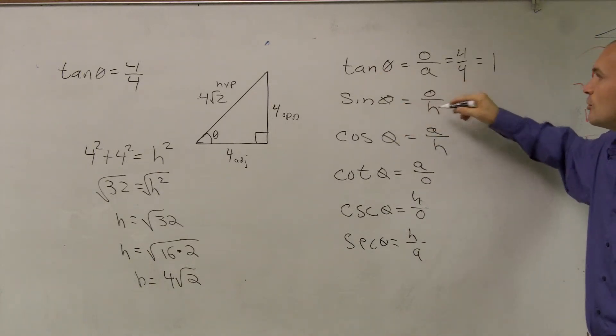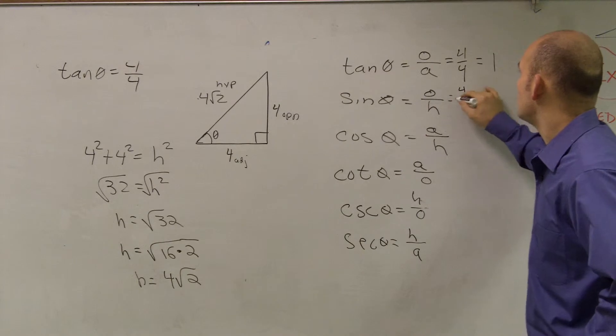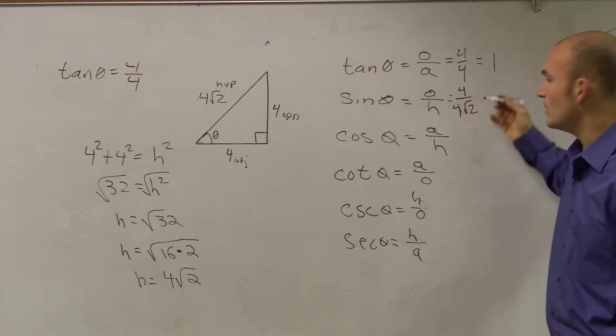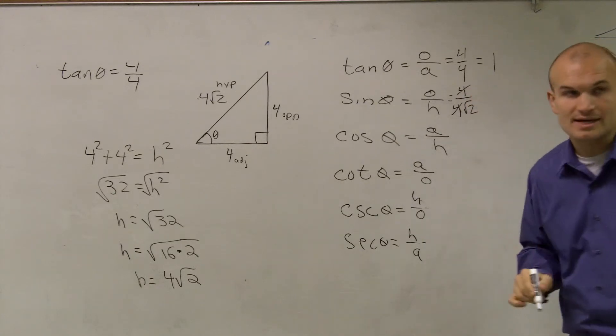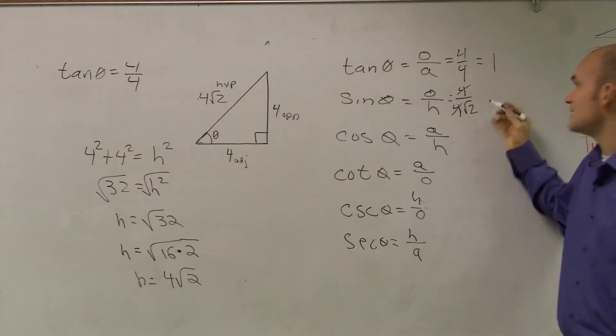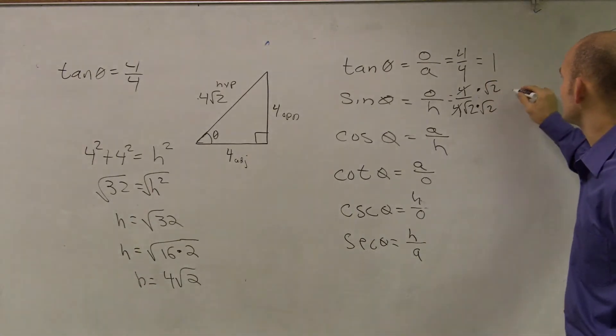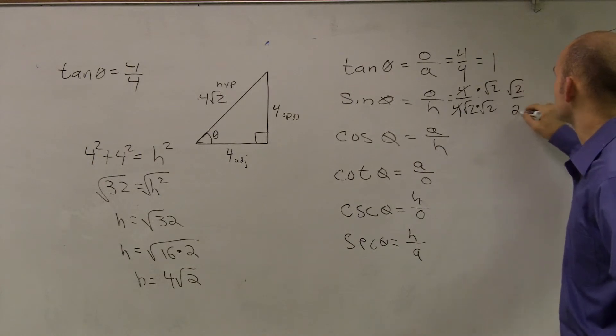Sine, opposite over hypotenuse. 4 over 4 radical 2. Well, one thing, we know that the 4s are now going to cancel out. However, now I also have to rationalize my denominator by multiplying by radical 2 on the top and the bottom. Therefore, that's going to get 2, so I'll be left with radical 2 over 2.